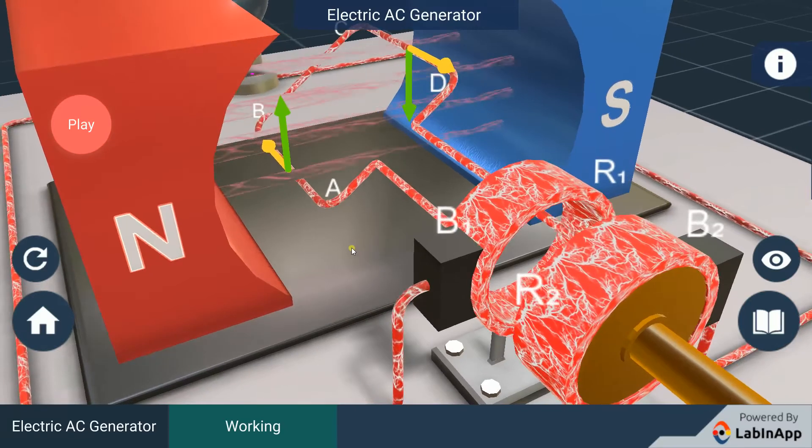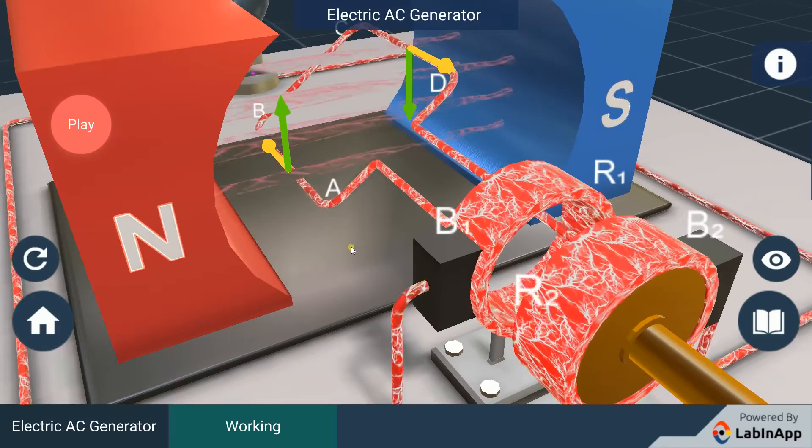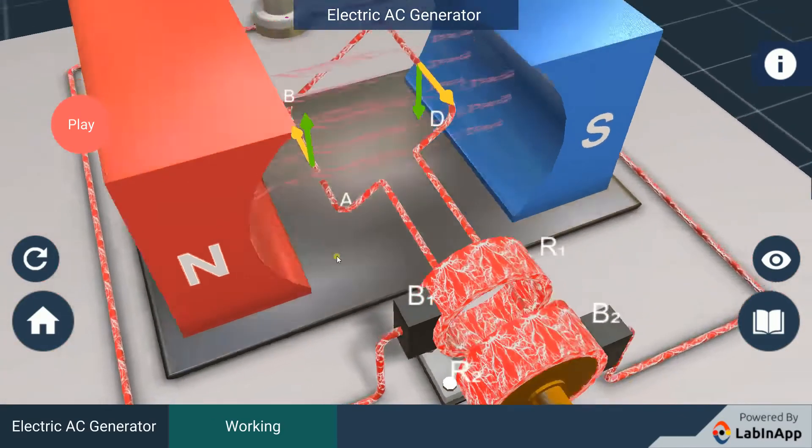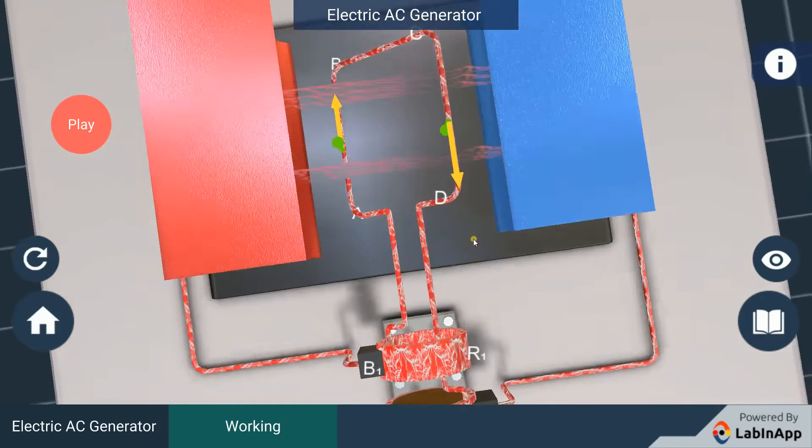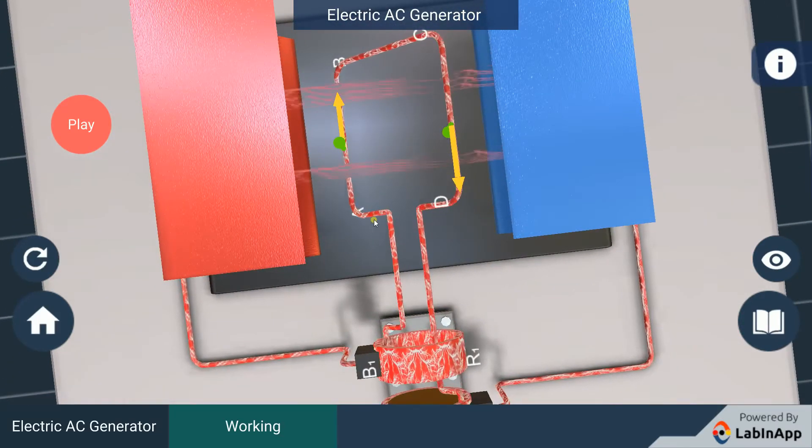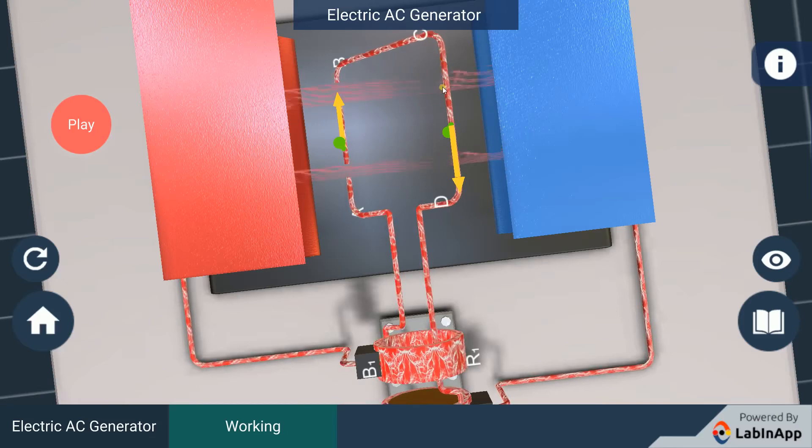The induced currents are set up in these arms along the directions AB and CD. Thus, an induced current flows in the direction ABCD.